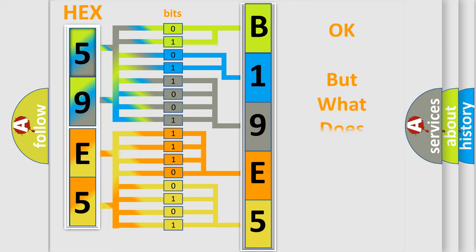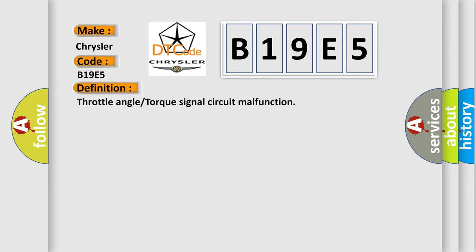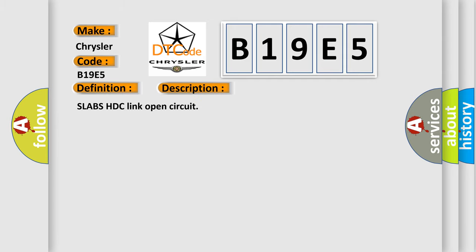The number itself does not make sense to us if we cannot assign information about what it actually expresses. So, what does the diagnostic trouble code B19E5 interpret specifically for Chrysler car manufacturers? The basic definition is: Throttle angle or torque signal circuit malfunction. A short description of this DTC code is: SLABS HDC link open circuit.